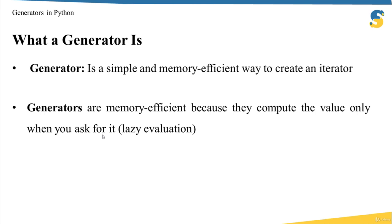To understand why generators are important, let me give a simple example. Assume you have a large text file and you want to count how many times the word 'hello' occurs. The file size is 32 GB, but you only have 16 GB of RAM. In this case, you are not able to load the complete file into memory. The solution is a generator, because it lets you read the file one line at a time, process that line, count the occurrences, then throw the line away and get the next one.